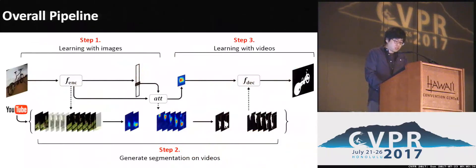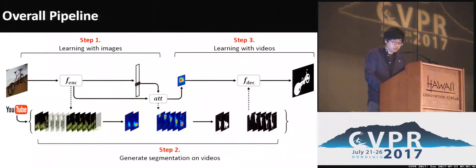To resolve these challenges, we propose a deep neural network that exploits both weakly labeled images and videos to compensate segmentation challenges in one data domain using the other.